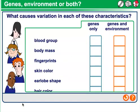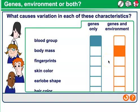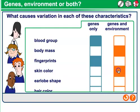Genes, environment, or both? What causes variation in each of these characteristics? Blood group — maybe genes only. Body mass — maybe the environment and genes, because exercise might contribute. Fingerprints — probably only genes. Skin color — most likely controlled by genes, but spending a lot of time in a particular environment might make my skin darker or tanner, so maybe both.